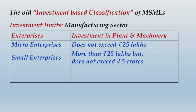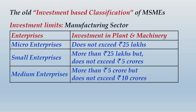Small enterprises were those whose investment in plant and machinery was more than 25 lakhs but does not exceed rupees 5 crores. Medium enterprises were those whose investment in plant and machinery was more than 5 crores but up to a maximum of rupees 10 crores. Any manufacturing entity with investment exceeding 10 crores would not fall under MSME classification — they would be out of the scope of MSME. This was the classification for the manufacturing sector.